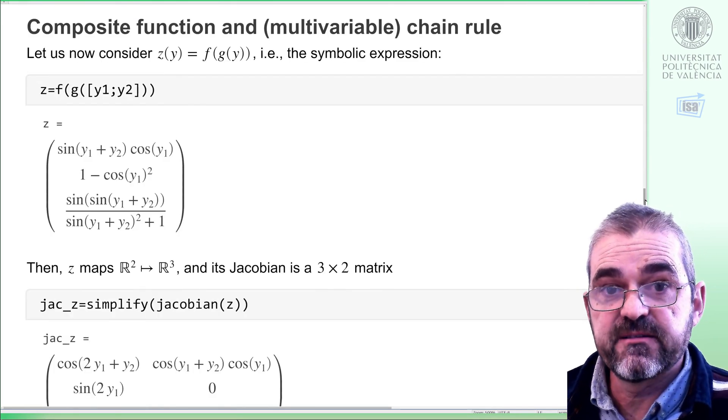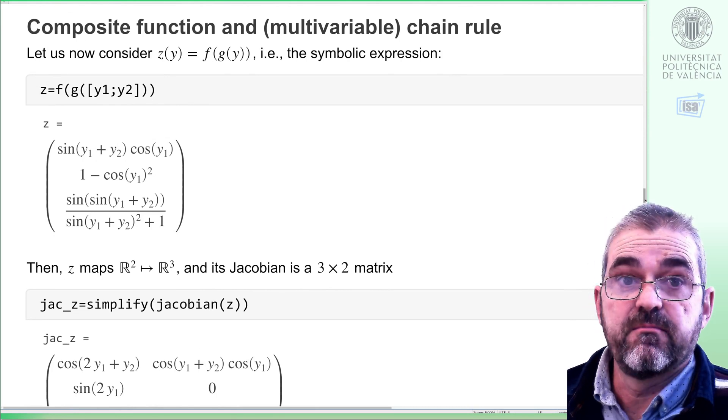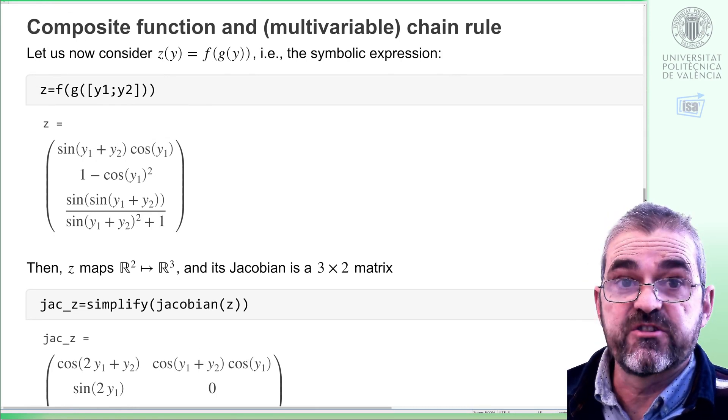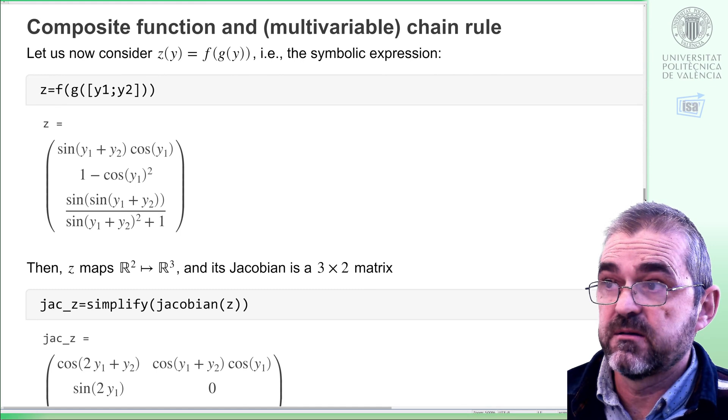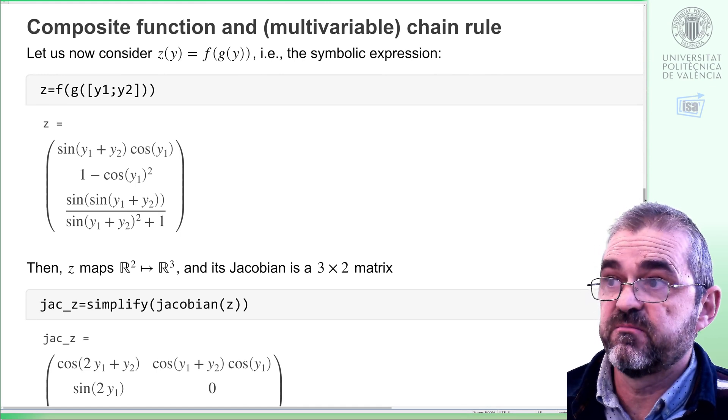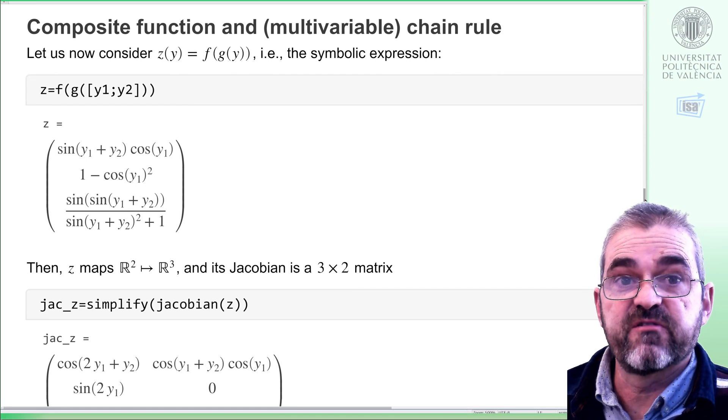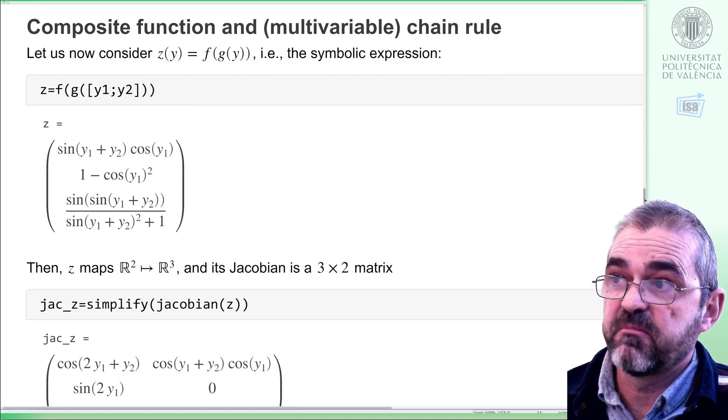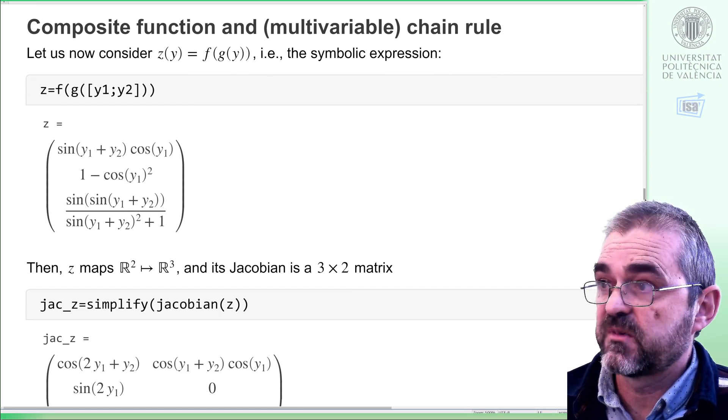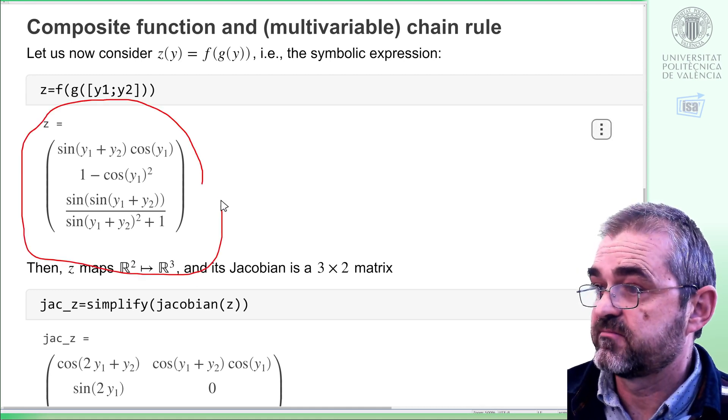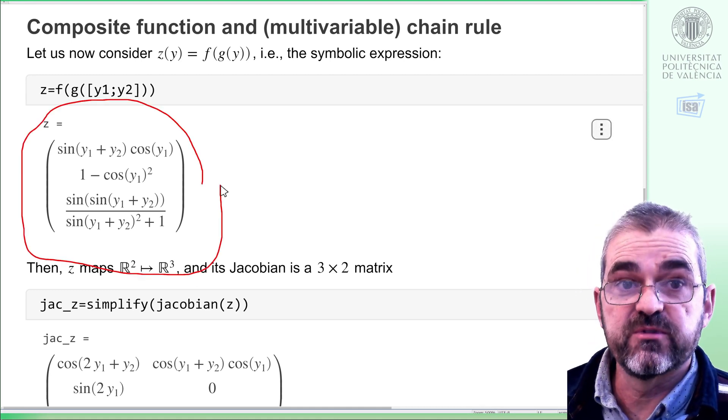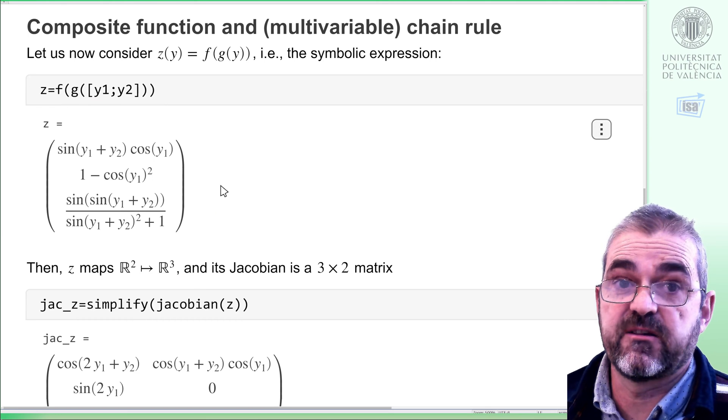Let's now illustrate how chain rule works by considering a new function z of y, which is the composition of f and g. I mean, instead of doing f of x, now we replace x by g of y. So, this is z, two inputs, three outputs.